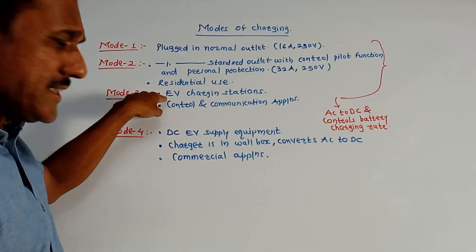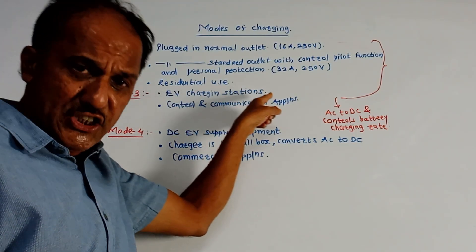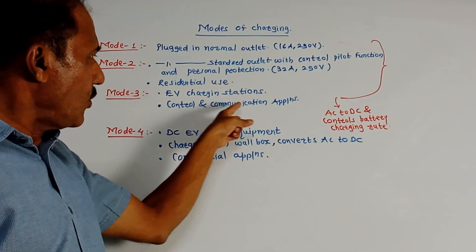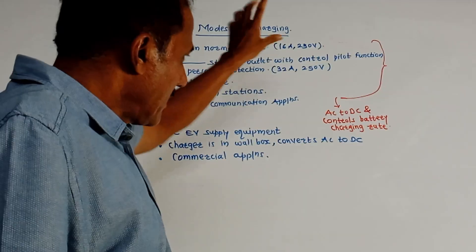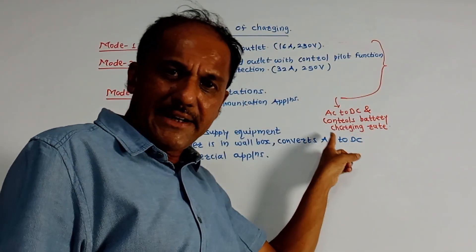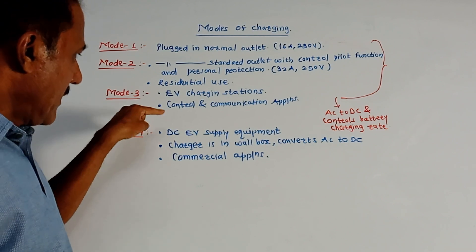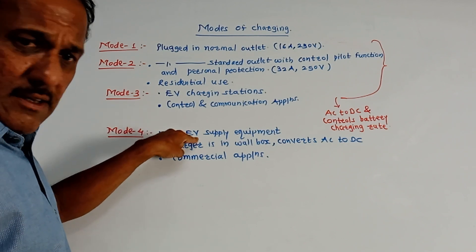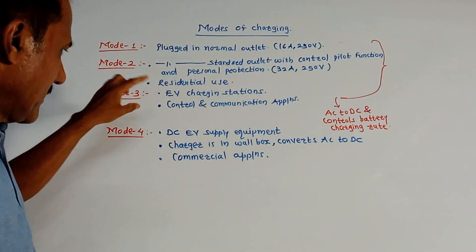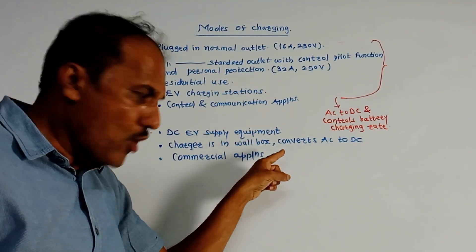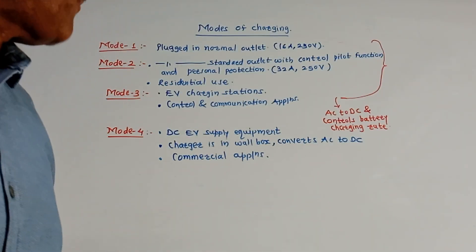Mode 3: charging takes place at EV charging stations and is used for control and communication applications. All three modes convert AC to DC and control the battery charging rate. Mode 4: DC EV supply equipment is used for the charging purpose. The charger is in the wall box and it converts AC to DC. Mode 4 is used for commercial applications.